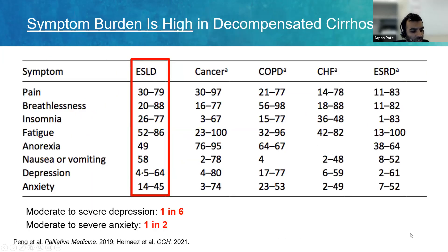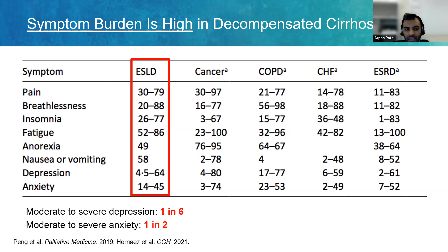I want to switch and talk about symptom management, which was another really important part of our guidance. In this systematic review, symptom burden for end-stage liver disease — even symptoms completely unrelated to complications of cirrhosis — is incredibly high, and actually comparable to patients with cancer, COPD, CHF, and end-stage renal disease. A recent study in Clinical Gastroenterology and Hepatology showed that the rate of depression is one in six for patients with cirrhosis, and one in two for moderate to severe anxiety. Mental health burden is also really high.